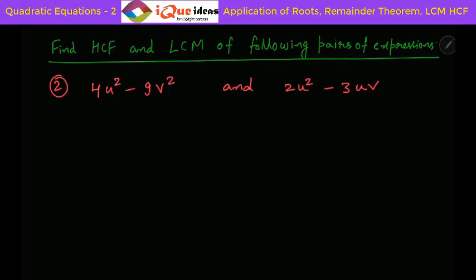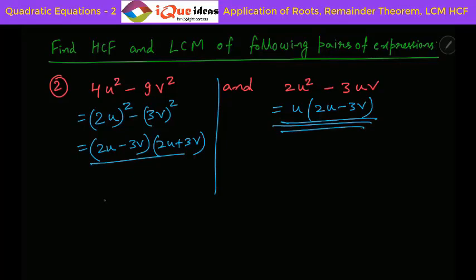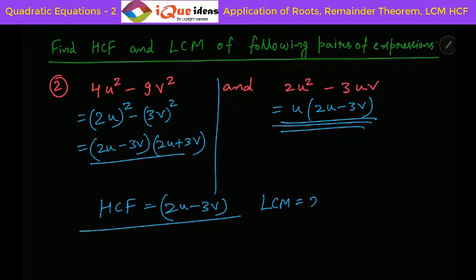Let us take the second question — find HCF and LCM. First factorize. The first expression is 4u square minus 9v square, which can be written as 2u whole square minus 3v whole square. Using x square minus y square equals x minus y into x plus y, this gives 2u minus 3v into 2u plus 3v. The second expression is 2u squared minus 3uv — take u common to get u into 2u minus 3v. The common factor is 2u minus 3v, so HCF is 2u minus 3v. LCM is 2u minus 3v into 2u plus 3v into u.